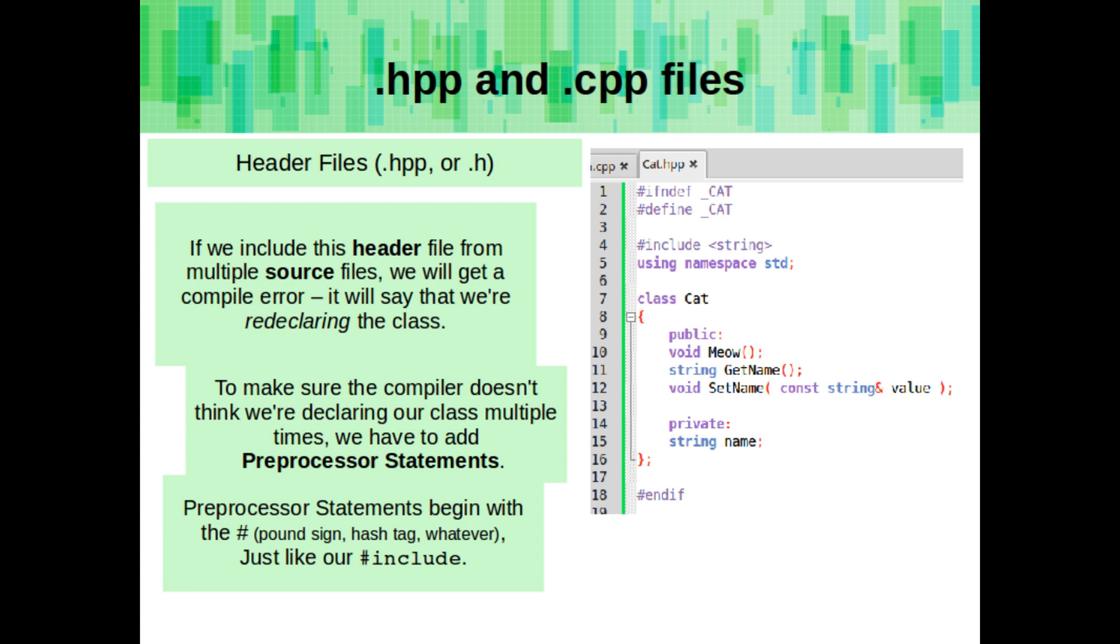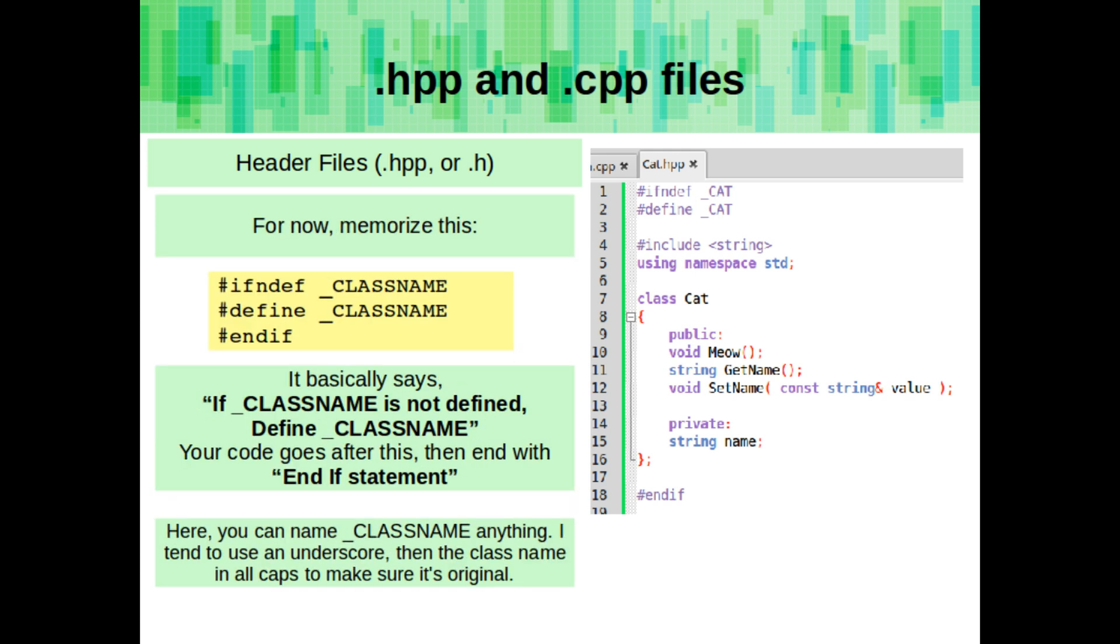To make sure the compiler doesn't think we're declaring our class multiple times, we have to add these preprocessor statements. Preprocessor statements begin with the pound sign, just like our pound includes. For now, just keep this memorized. Whenever you create a class, at the beginning of the file, put pound sign, if n def,